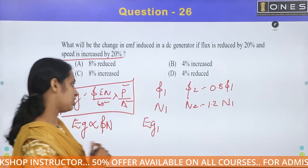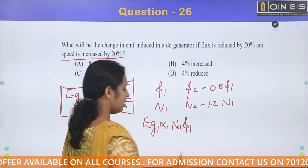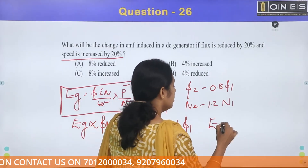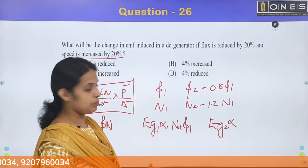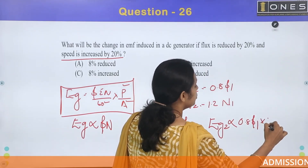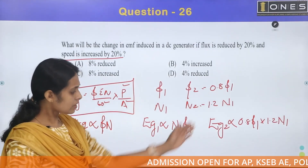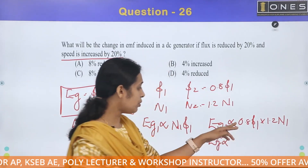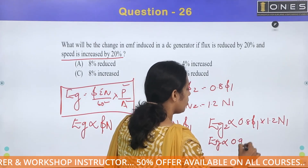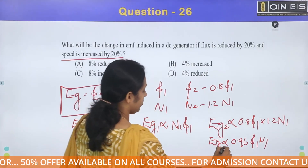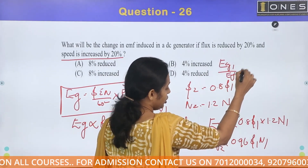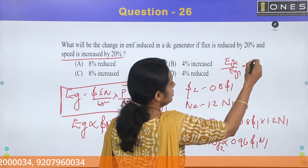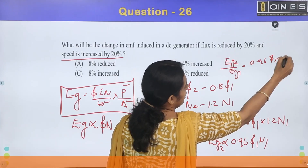Initial generated voltage EG1 is proportional to N1 × φ1. New generated voltage EG2 is proportional to new flux 0.8φ1 and new speed 1.2N1. So EG2 ∝ 0.8 × 1.2 × φ1 × N1 = 0.96 φ1N1. Therefore, EG2/EG1 = 0.96.